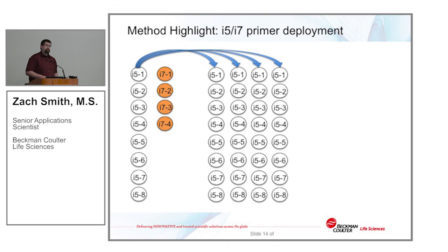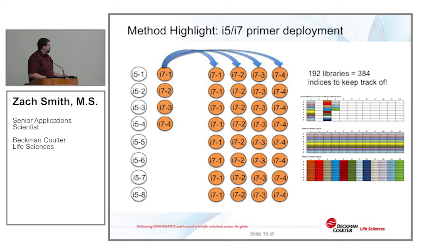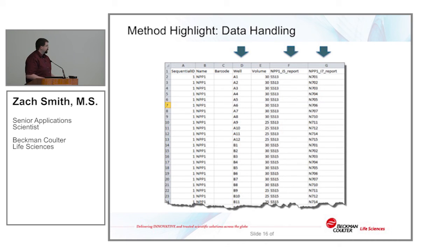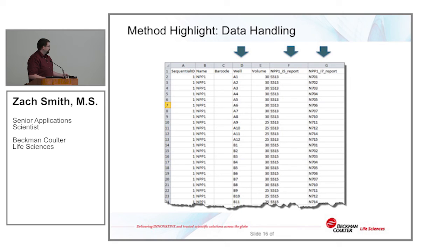Primer deployment can be really tricky. This follows a standard Nextera protocol — with eight i5 primers and, in a 40-sample scenario, four i7 primers, the machine automatically propagates i5s down columns and assigns i7-1 to the first column, i7-2 to the second, and so on. With up to 192 libraries and 384 indices to track, this gets complex very quickly, and no one wants to manually enter this data into an Illumina sample sheet. We use Biomek's native dataset functionality to create datasets so that when an index primer ID is assigned to a source well, that data transfers to the destination plate upon transfer. We then generate a report showing which well has been associated with which i5 primer and which i7 primer — you simply cut and paste this into your sample sheet and you're done.